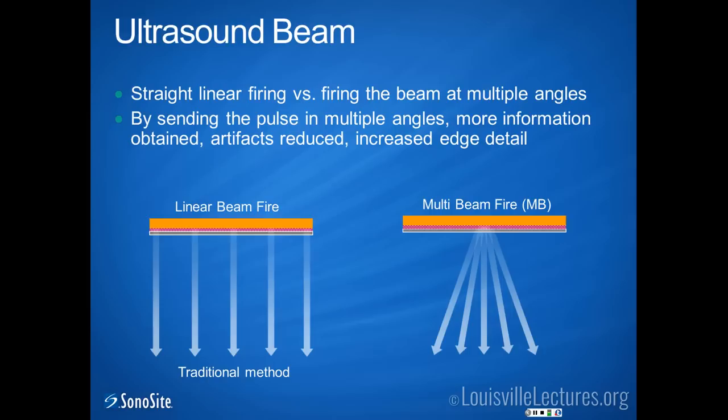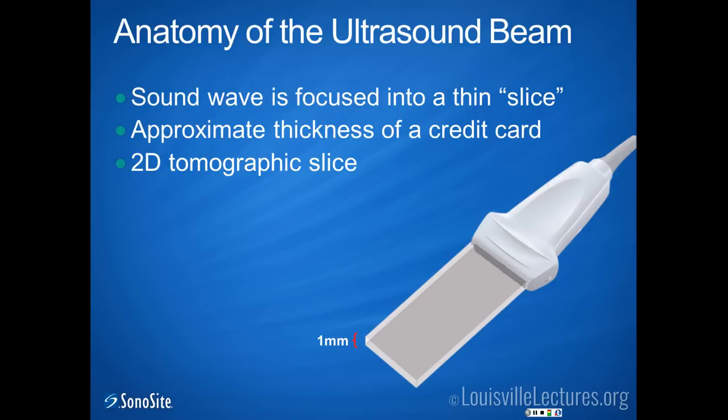There was an older linear beam technology. The newer machines use multi-beam firing, where the ultrasound waves go out at an angle rather than in a very linear fashion. The reason is that you get echoes back that reduce artifacts and increase detail. Most machines now come with this as standard, so I wouldn't worry about it too much.